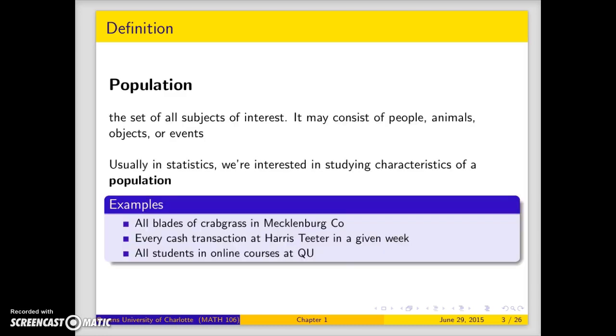The population is really what we are after in statistics. We want to know something about a population. A population could be people, animals, objects, events, you name it. The word all in this definition is the most important word.